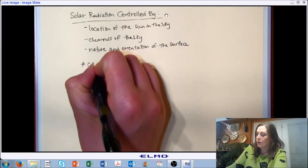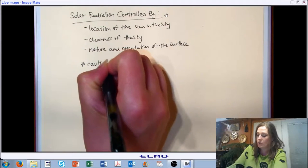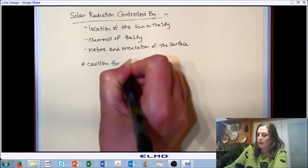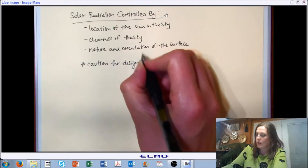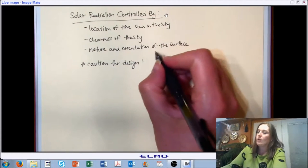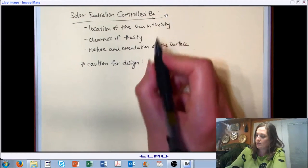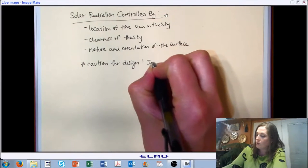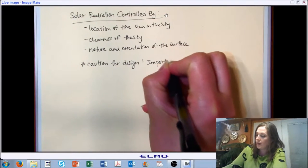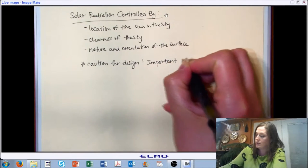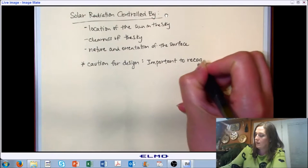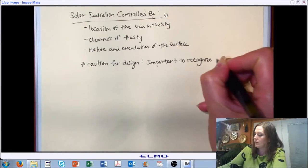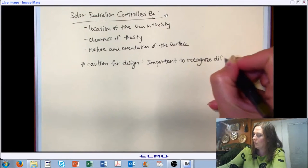We can also look at the amount of solar radiation that is influencing a surface in a number of different ways. Here we're just going to highlight a caution for making sure that when you're considering solar radiation, you're considering a scenario that's appropriate to your application. In order to be able to do that, it's important to recognize the differences in the way we think about solar radiation coming onto the surface.